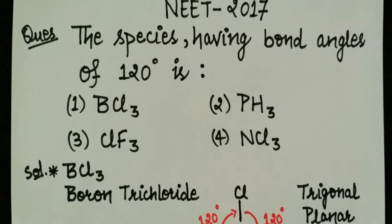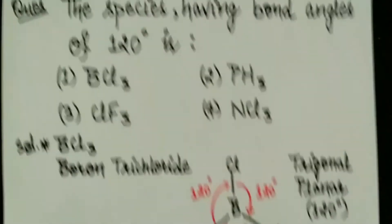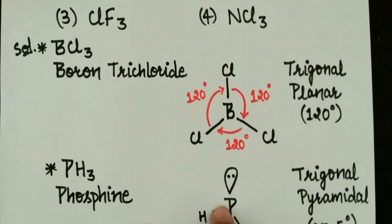We have four options: BCL3, PH3, CLF3, and NCL3. Here I have explained the detailed structures of them one by one.